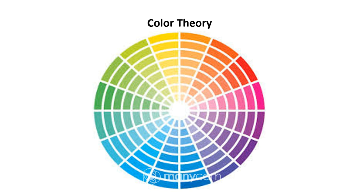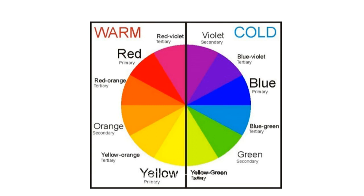This page, we have the color theory. Color theory refers to the colors in a color wheel that you can see from light to dark. We have two types of colors: warm and cold. Warm colors are: tertiary red-violet, primary red, tertiary red-orange, secondary orange, tertiary yellow-orange, and primary yellow. Cold colors are: secondary violet, tertiary blue-violet, primary blue, tertiary blue-green, secondary green, and tertiary yellow-green.